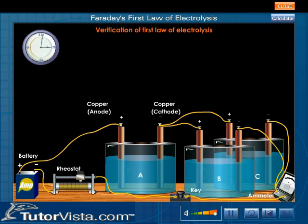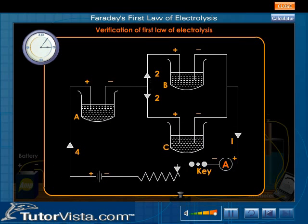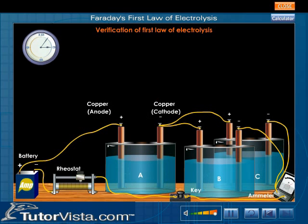Click on the voltameter to observe the deflection in the multimeter. We observe that the current passing through voltameter A divides equally at the junction and flows into voltameters B and C. Now switch off the circuit after five minutes.